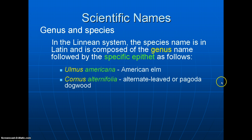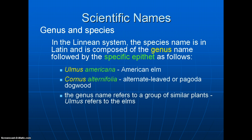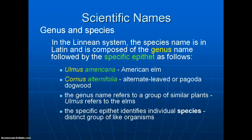Another example is Cornus alternifolia, which is pagoda dogwood. The genus name refers to a group of similar plants — Ulmus refers to all the elms. You can use Ulmus by itself to refer to the elms or Ulmus species. But you can't say americana by itself — it doesn't mean anything. The specific epithet identifies an individual species within a distinct group of like organisms.